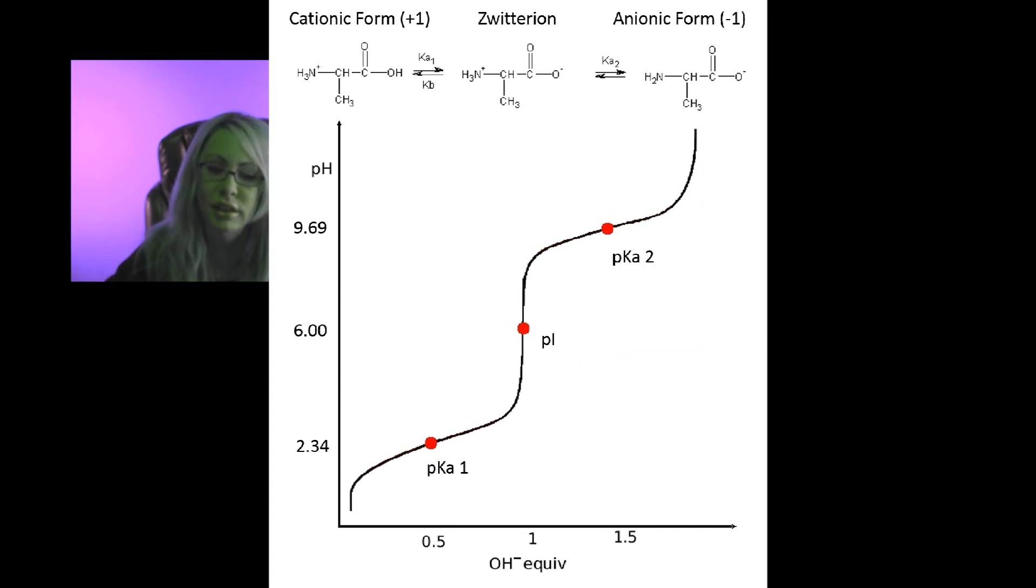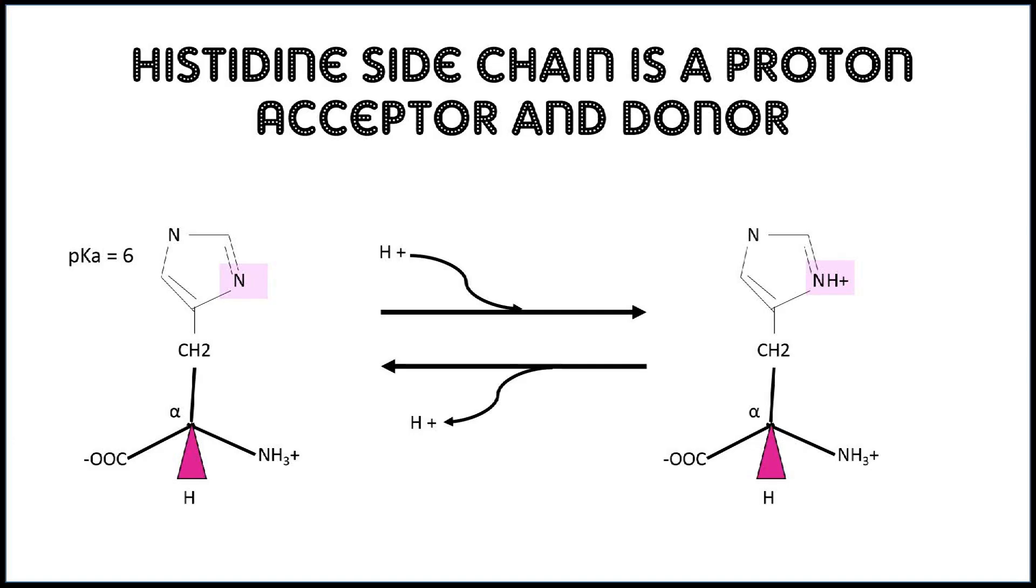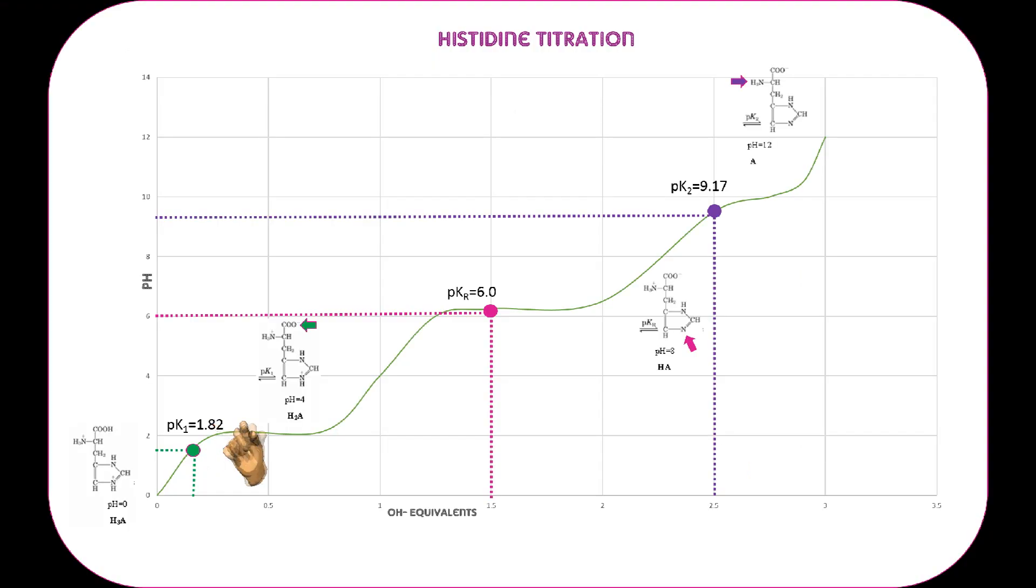Now histidine has an imidazole group that has a pKa of 6, so it is readily going to participate in biochemical reactions. The nitrogen on the R chain is going to be donating and accepting protons, so we're going to be able to use histidine in a lot of biochemical reactions. So let's look at the histidine titration curve. We have a pKa1 and a pKa2—those are the alpha carboxyl and alpha amine pKa's that all amino acids have. We're adding the pKa R. We look at it on this graph—we see that there are three plateaus where we have pKa values, and so this can act as a buffer in three different ranges. And as you see, the pKa R is close to physiological pH, so we will be using that in biochemical reactions to donate and accept some protons.